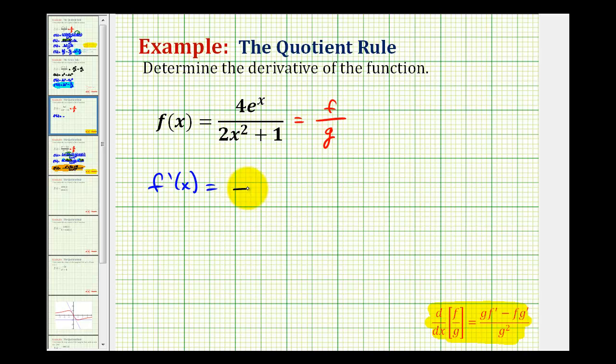I always like to start with the denominator because the denominator is just going to be the denominator squared. So we'll have the quantity two x squared plus one raised to the second power.